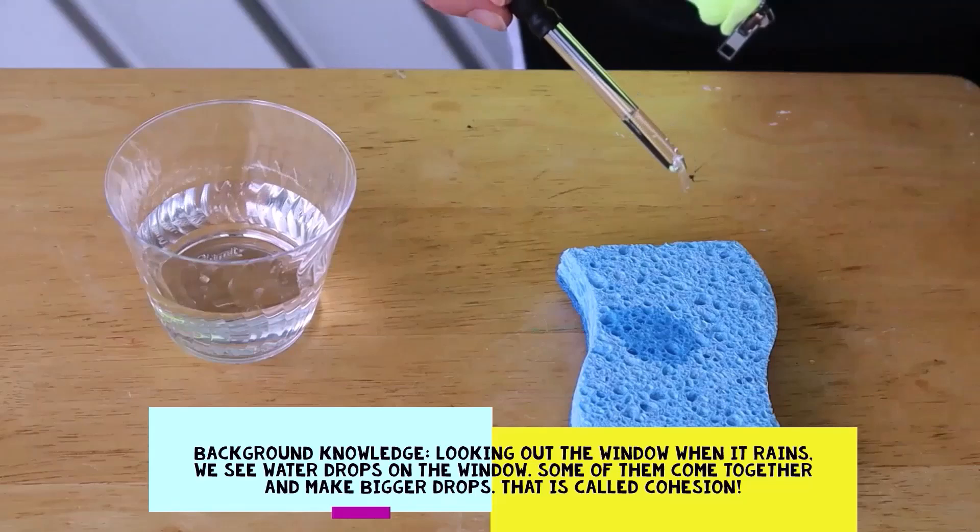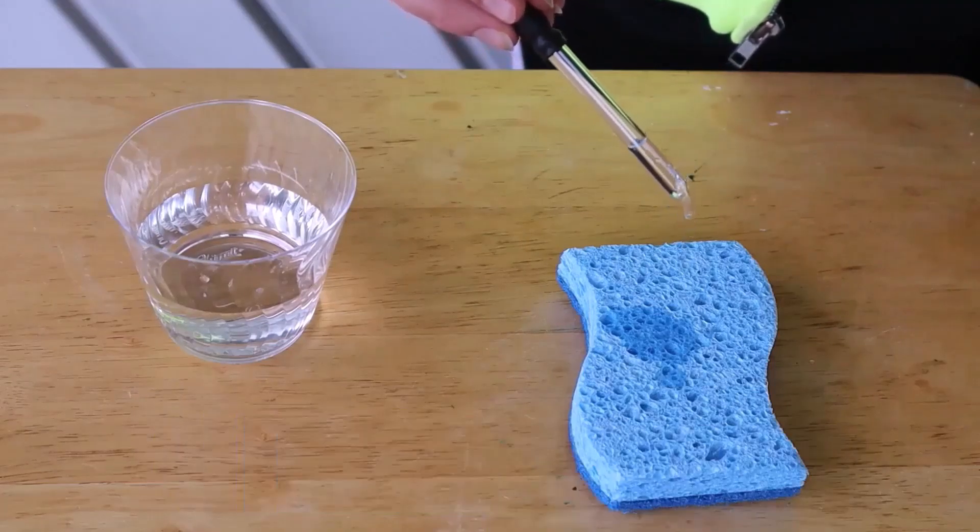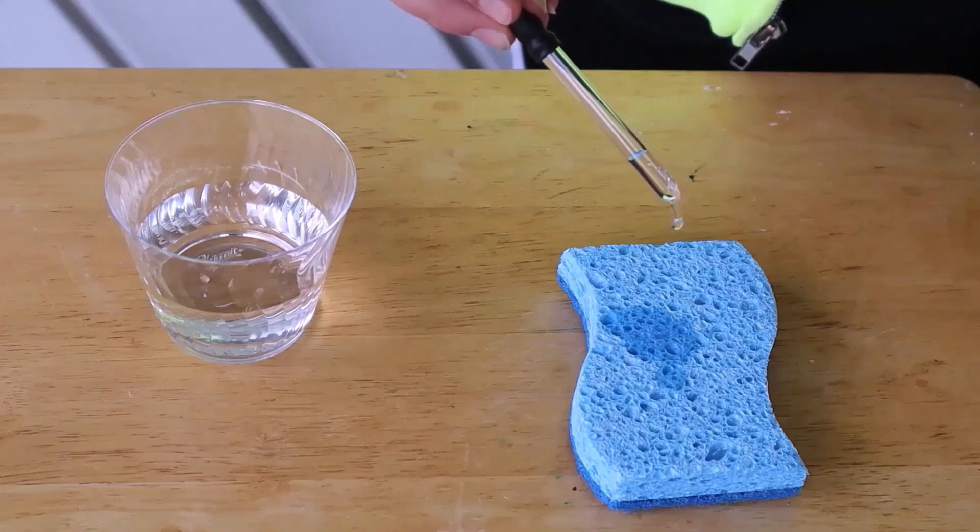Then I have the students explore how the water and eyedropper work together. They also practice putting small and large droplets of water onto a sponge.